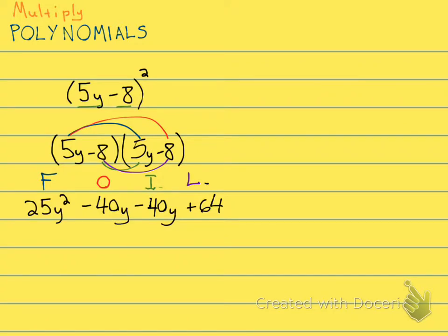Negative 40y minus 40y. You can use your calculator if you need to. It's going to give you negative 80y. First term drops down. 25y squared minus 80y plus 64.